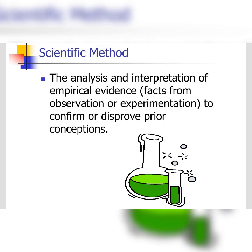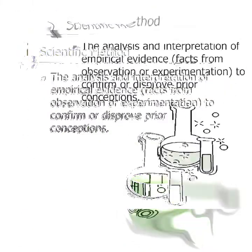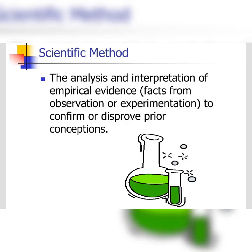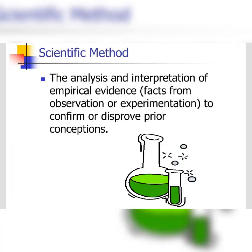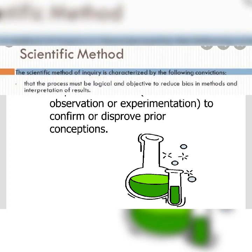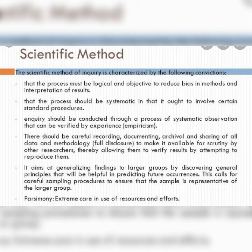Another important term is the scientific method. Whenever we talk about research, we are talking about scientific research. The scientific method means the analysis and interpretation of empirical evidence — facts from observation or experimentation — to confirm or disprove prior conceptions. This involves collecting empirical evidence, interpreting that evidence, and drawing on facts gathered through experimentation to confirm whether a previously held view or opinion is right or wrong.